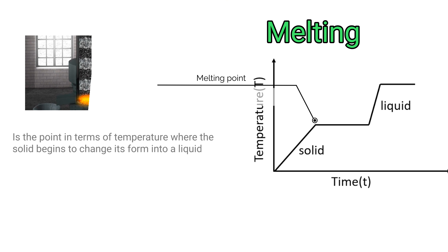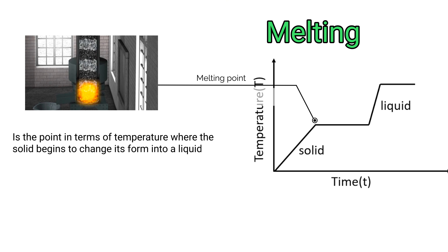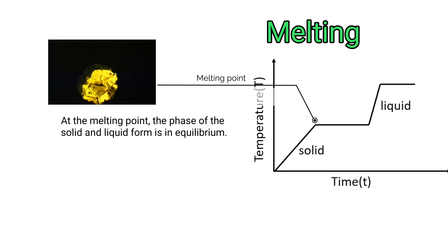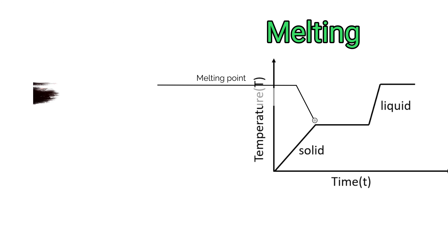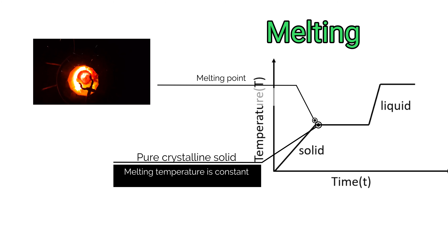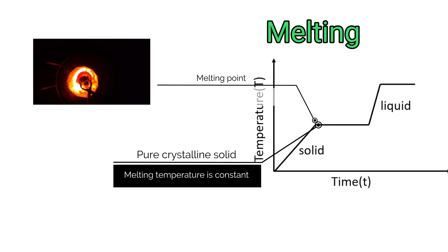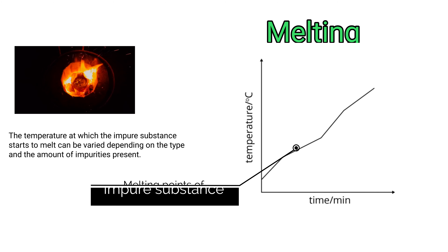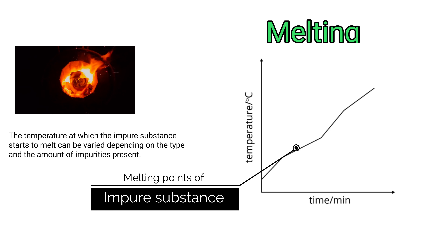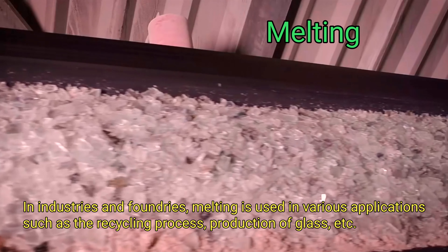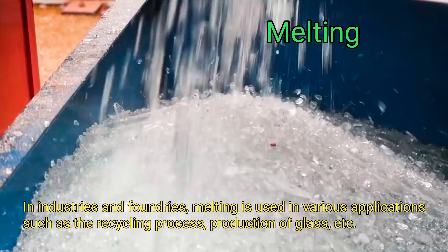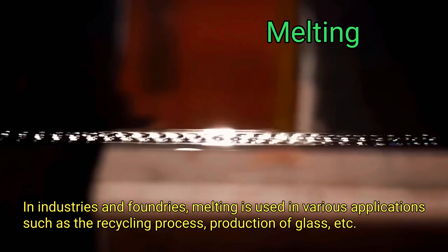During the change in state of the substance from solid to liquid, no change occurs in the chemical properties of the substance. The density also decreases. The melting point is the point in terms of temperature where the solid begins to change its form into liquid. At the melting point, the phase of the solid and liquid form is in equilibrium. For pure crystalline solid substances, melting occurs at a fixed temperature. The temperature at which impure substances start to melt can vary depending on the type and amount of impurities present. In industries and foundries, melting is used in various applications such as the recycling process and the production of glass.